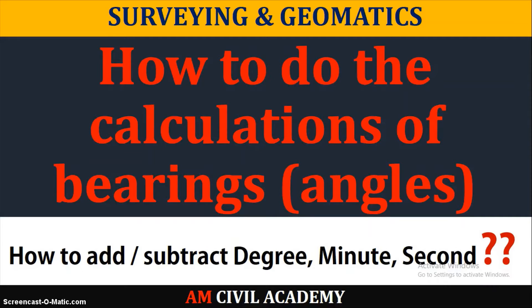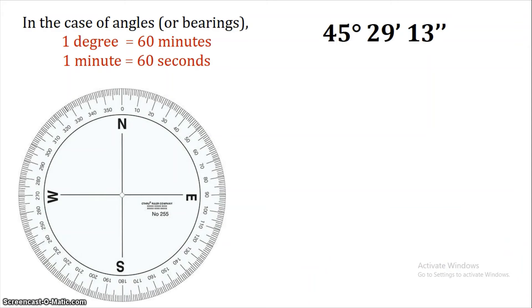In the surveying first module, we have done calculations on local attraction and elimination problems. Now we are going to study bearing angles. We will measure angles in a specific direction using the prismatic compass, measuring angles relative to magnetic north, and we will study the bearing of an angle.